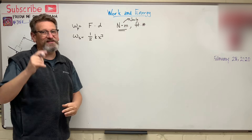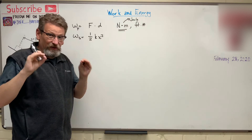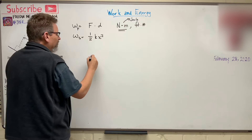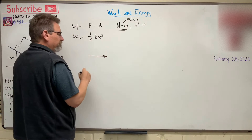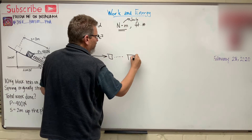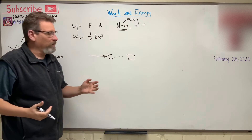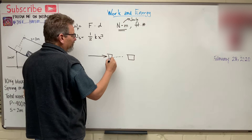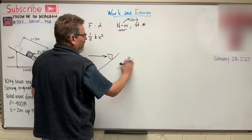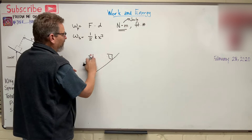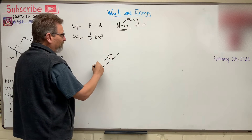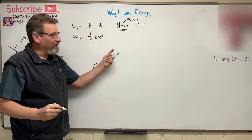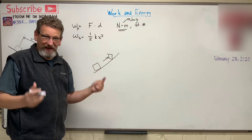Let's talk about the sign of that work, because that's important. If the displacement is in the direction that the force is acting — so if I put a force on something and the thing moves in that direction — we would call that positive work. If I'm putting force on it up the incline, but there's not enough force and the block moves down the incline, then since the force was going up but the block moved down, we would call that negative work.